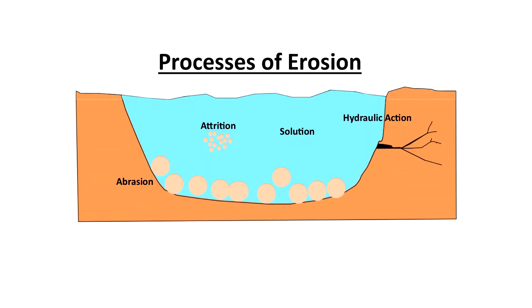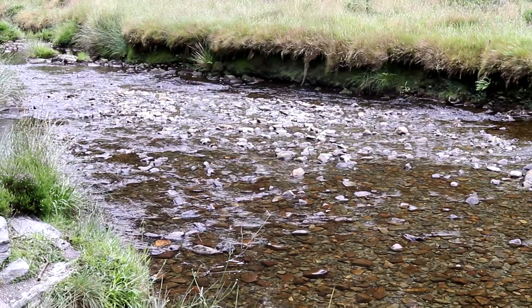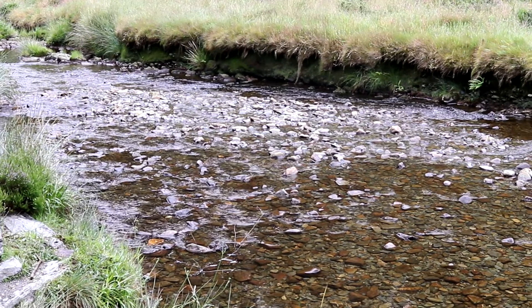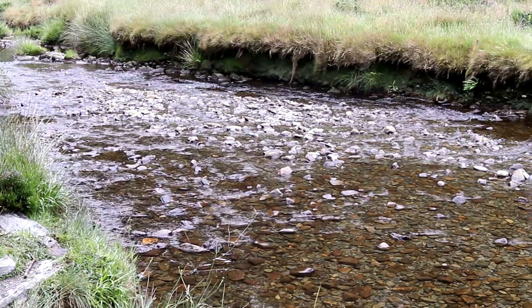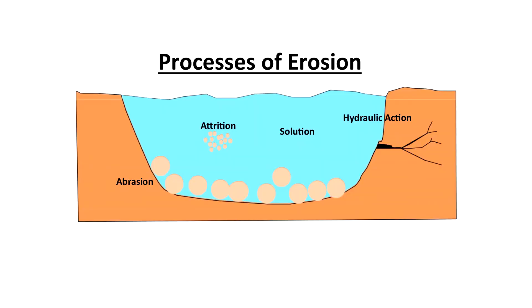Attrition sees the stones that are being transported hitting each other and therefore wearing down over time to form smaller and more rounded pebbles. Finishing off with solution, which is when rocks like limestone are dissolved as the water flows over it.